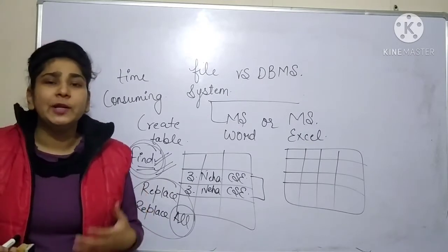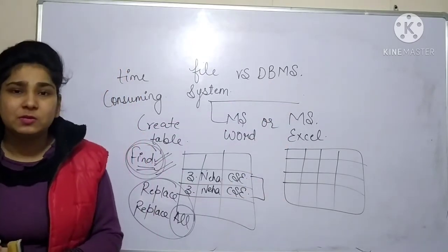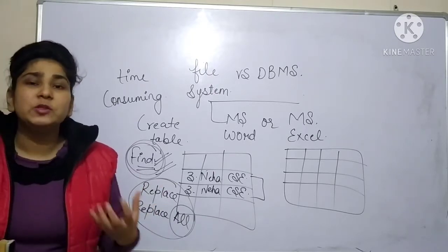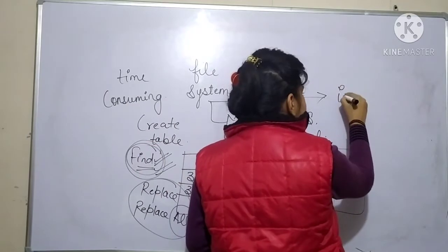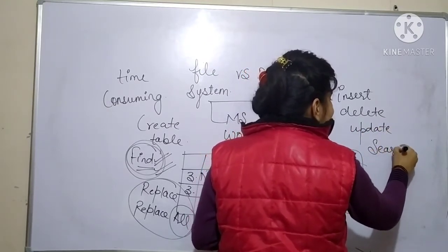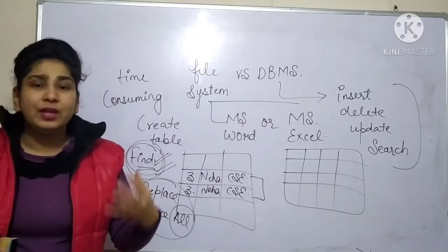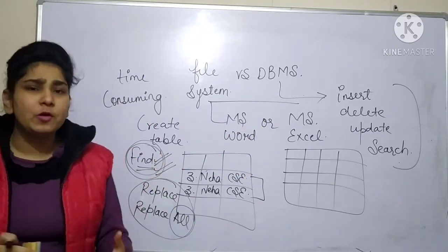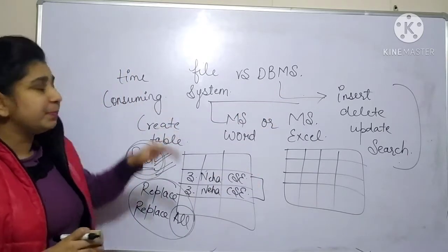In software projects and in big companies, we really use database management system because we want to perform our operations at a very fast speed. With the help of database management system, you can insert your data, you can delete, you can update, or you can search your data at a much faster rate as compared to file system. If you have to determine whether there is any duplication in data, you can also determine that with the help of database management system. The total number of operations we can perform are actually more in database management system as compared to the file system.